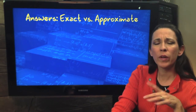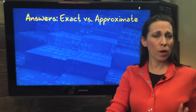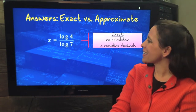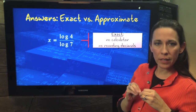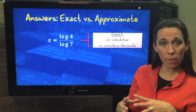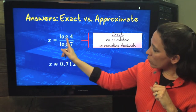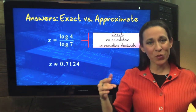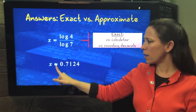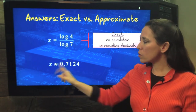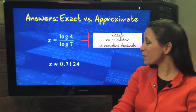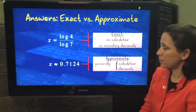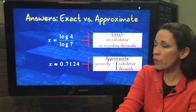Now there is a difference between exact answers and approximate answers. Your teacher may want both, just the exact, or just the approximate. This is what we would call an exact answer — it's exact because we didn't use a calculator; we leave it in logarithm form. If you put this in your calculator — log of 7 divided by log of 4 — you're going to get a long string of decimals that you'll have to round. Whenever you round, use the squiggly equals sign instead of the straight equals. This means approximate.